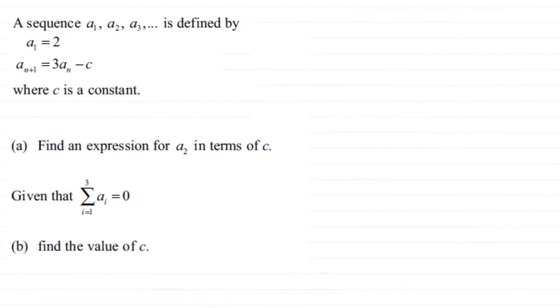This is an example on sequences and sigma notation. We have a sequence of terms a₁, a₂, a₃, and so on, defined by the first term a₁ being 2, and any subsequent term a(n+1) equals 3 times the previous term aₙ minus a constant c. In the first part (a), we need to find an expression